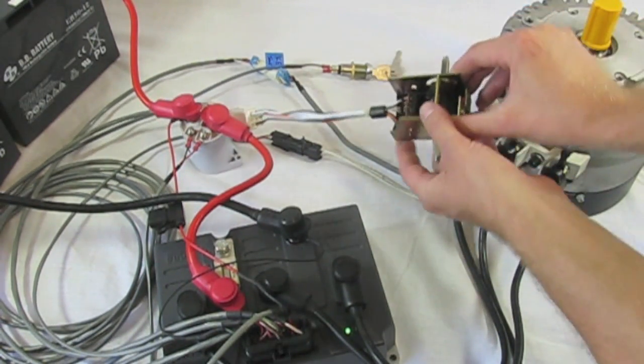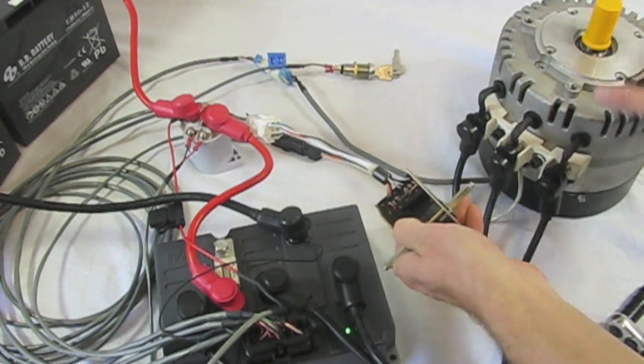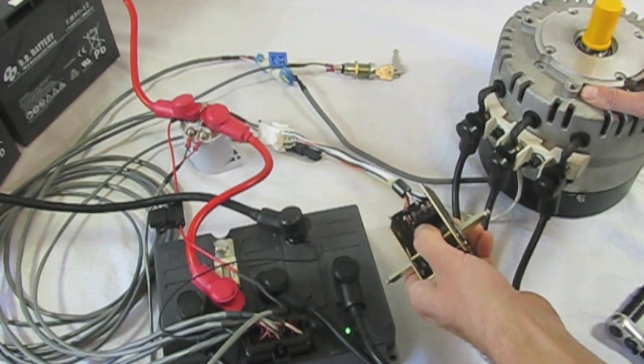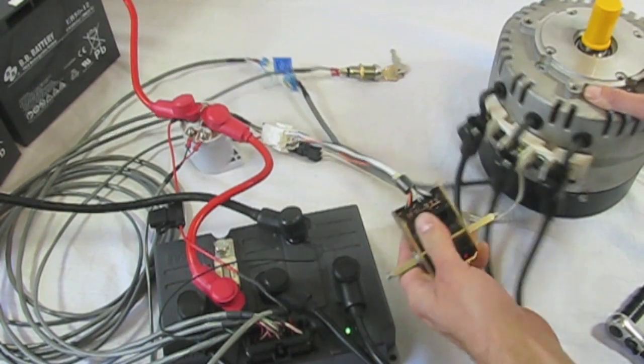If the green light on the controller is ever flashing that means that there's a fault somewhere in the system and you can count the number of flashes and look up the fault code in the manual which is available on our website.